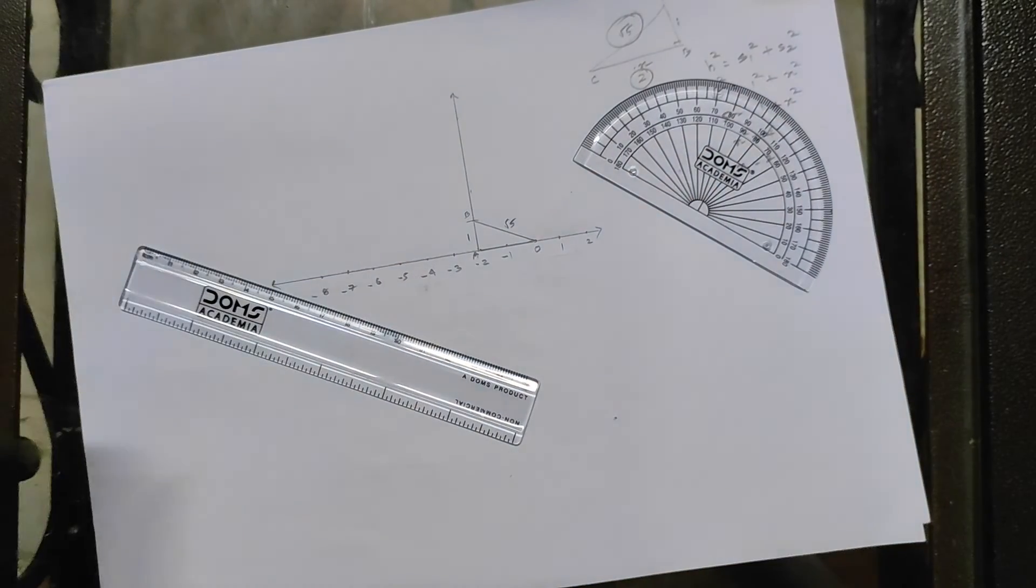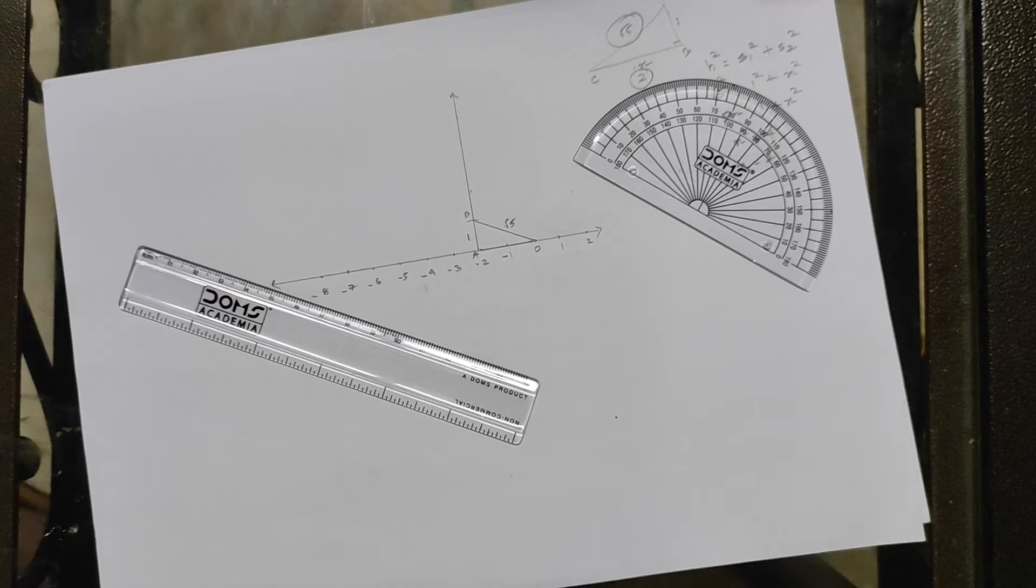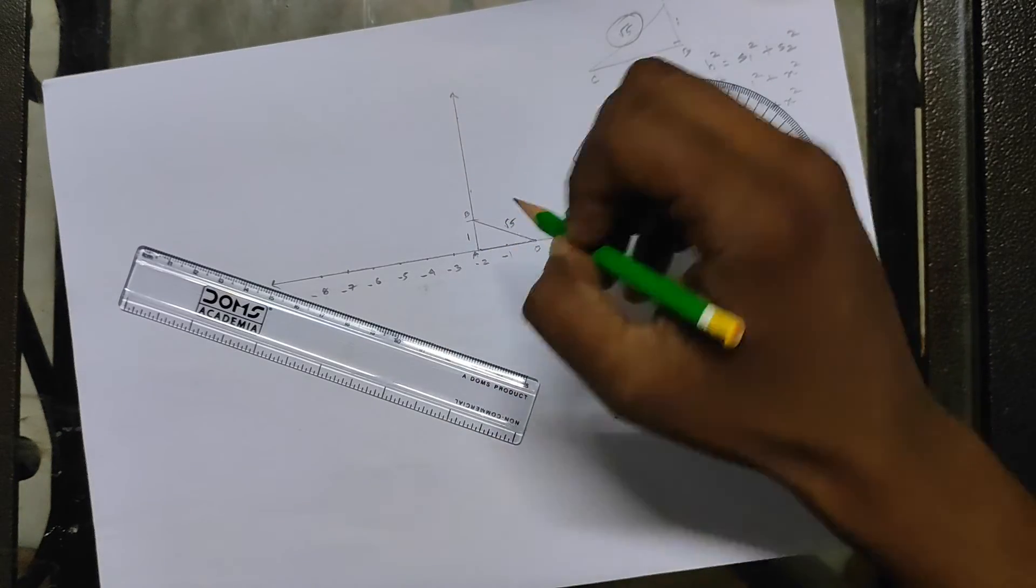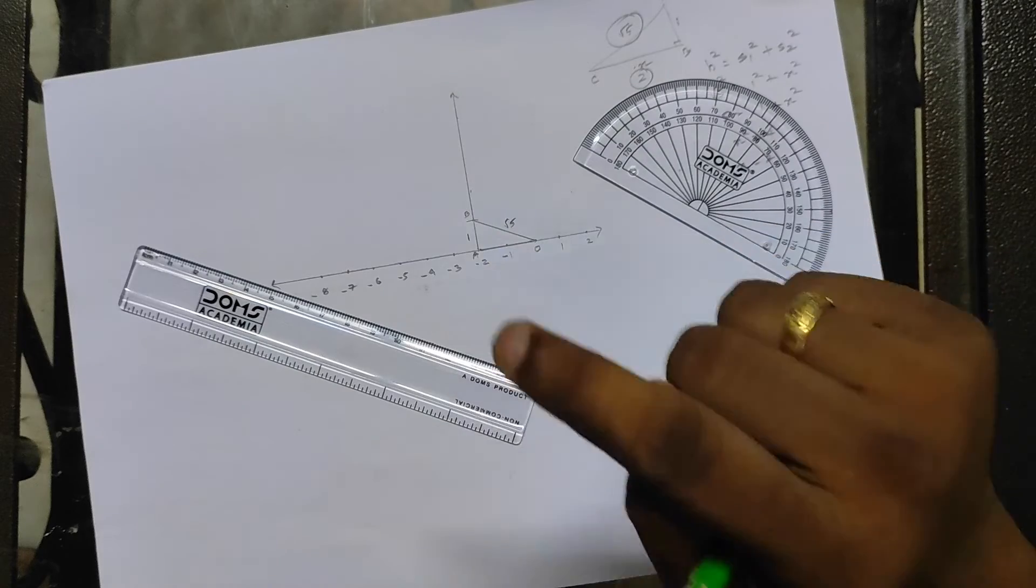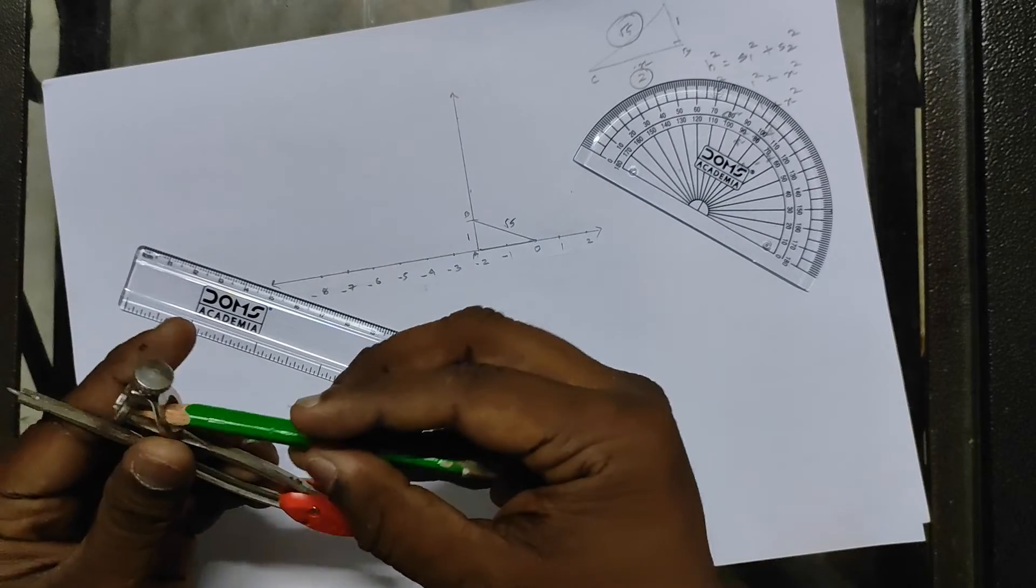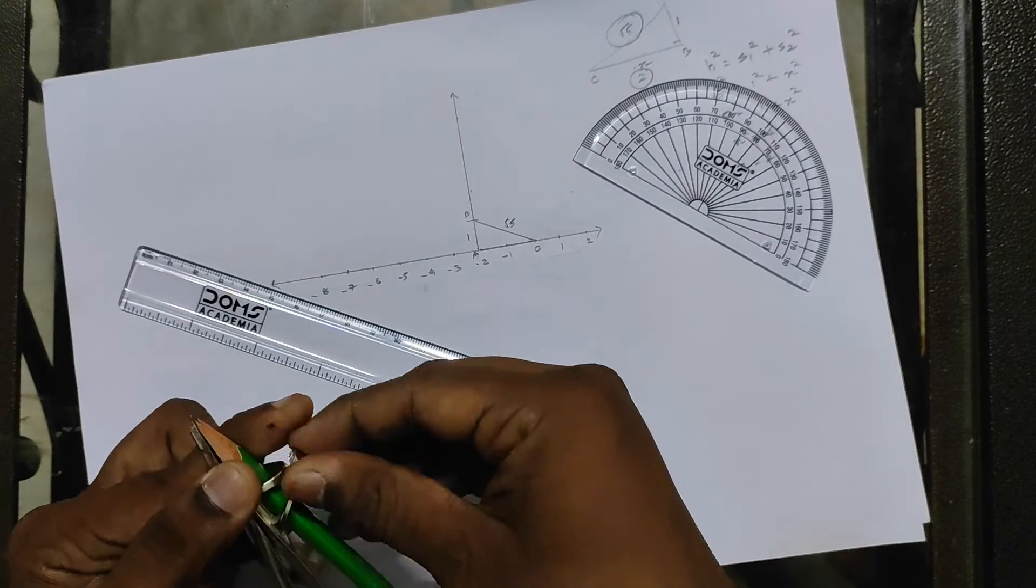But since I told you, again the question is - this is what mostly the students do mistake - they just make OB and they just leave it. No, the question is you need to represent root 5 on the number line, so you need this on the number line. So again use your compass.